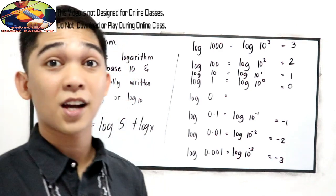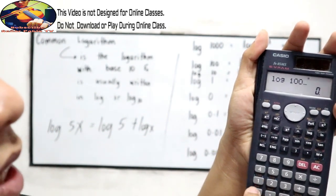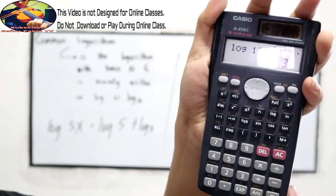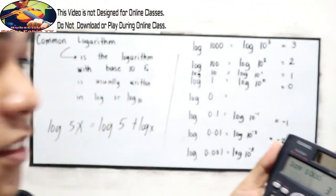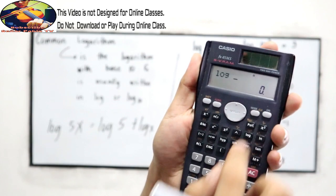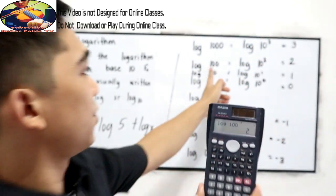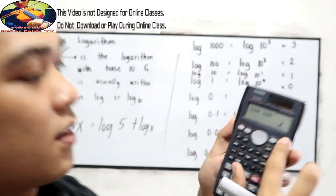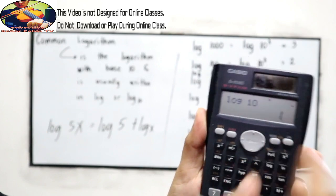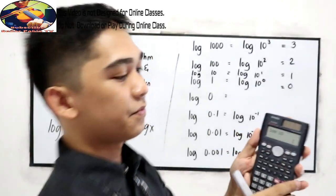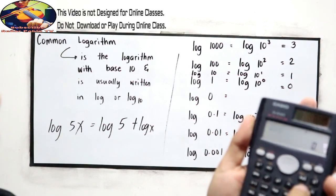Let's check using the calculator. Log 1000, that is 3. Log 100, that is 2. Log 10, which is 1. And log 1, that is 0.